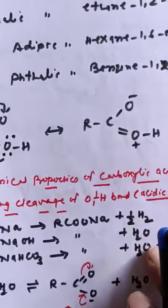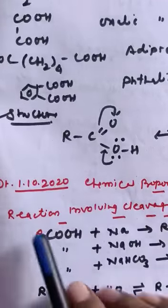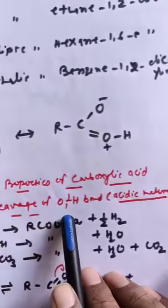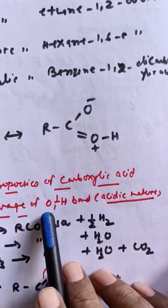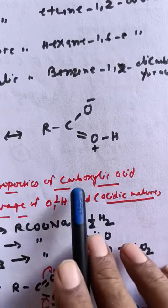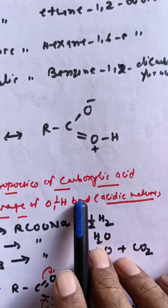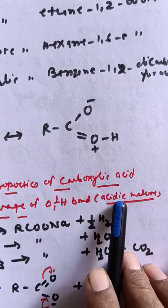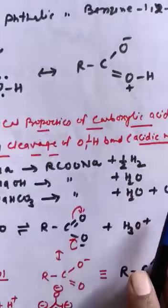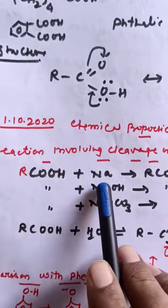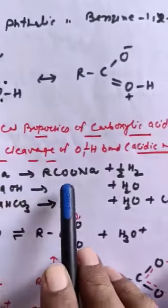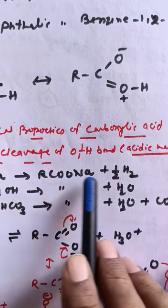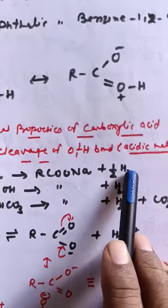Chemical properties of carboxylic acid. Reaction involving cleavage of OH bond. OH bond means all these type of reactions shows the carboxylic acid acidic nature. For example, when carboxylic acid reacts with sodium, it gives sodium carboxylate with the elimination of hydrogen gas.